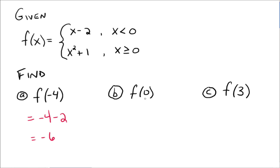All right, so f of 0 — we say, where does 0 fit in? 0 is certainly not less than 0, so we can't use the first part. 0 is greater than or equal to 0, so yes, it fits in down here, which means we use x squared plus 1. So that's going to be 0 squared plus 1, which goes to 1. So f of 0 is just the number 1.